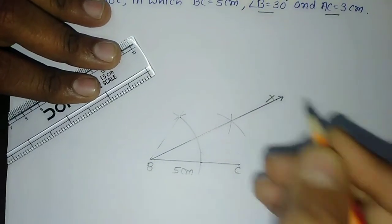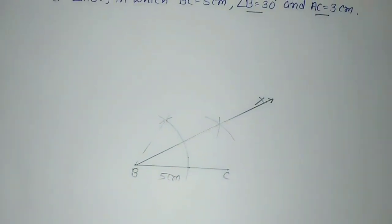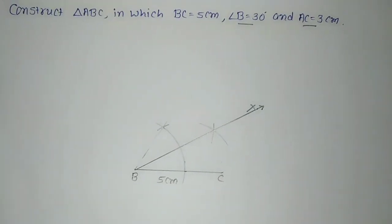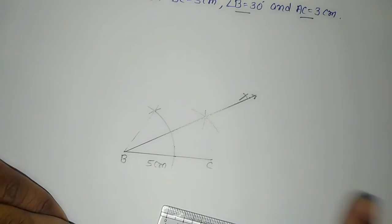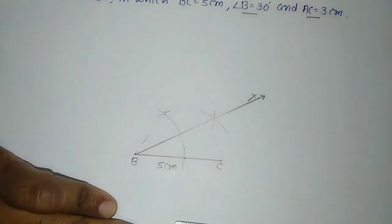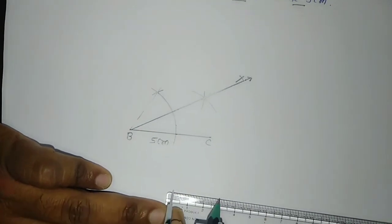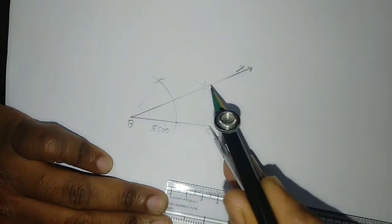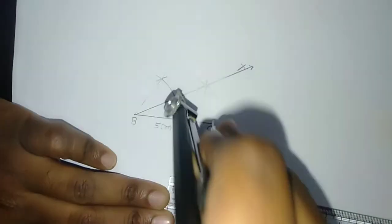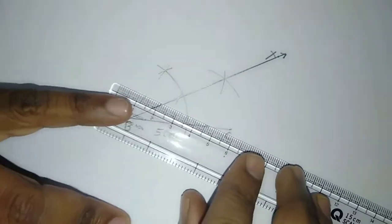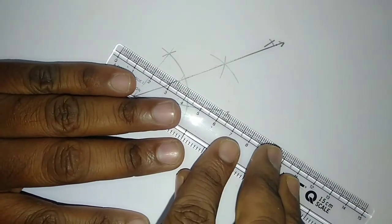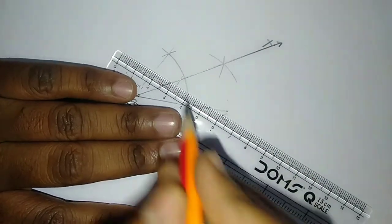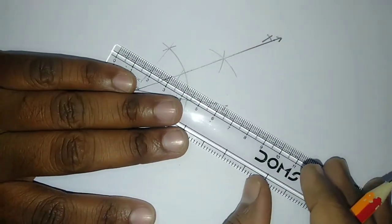This ray is ray BX. Now we want AC equal to 3cm. Point A must be such that A to C measure would be 3cm. This is 0 and this is 3. Then I'll put the point on C and draw the arc. This arc is intersecting here. Then I will draw this line segment. This arc intersecting ray BX at this point and point C.